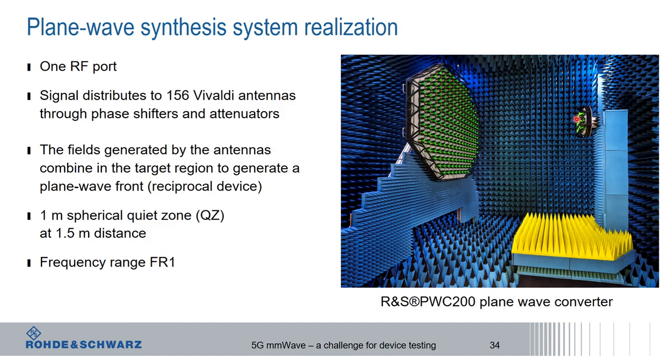For comparison, achieving the same one-meter quiet zone in direct far field at 3 GHz would require a 20-meter distance. The PWC 200 dramatically shrinks space requirements. You can do this testing at your benchtop with the ATS-800B or in a rack with the ATS-800R, or for base station testing, in a much smaller chamber using the plane wave converter.